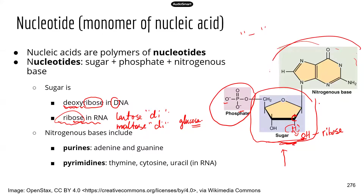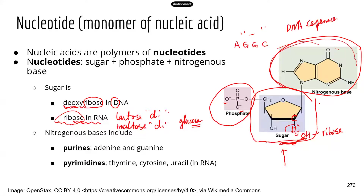The third component is the nitrogenous base, which is probably the most important part of each nucleotide because it provides the basis for genetic information that varies between individuals. There are two groups of nitrogenous bases: purines and pyrimidines. Adenine (A) and guanine (G) are purines. Thymine (T) and cytosine (C) are pyrimidines. These are the four bases found in DNA.